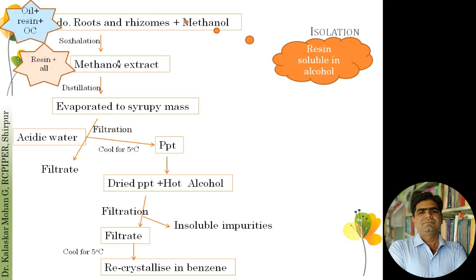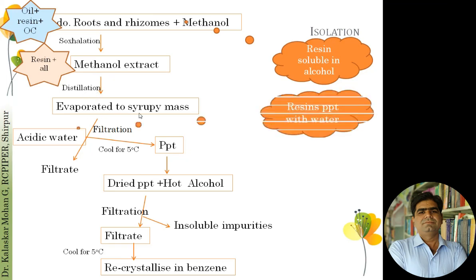The next step is to separate the resin from the other constituents. We know that when resin is added to water, it precipitates out. So the extract is concentrated by distillation to get a syrupy mass, and this syrupy mass is mixed with acidified water. As soon as acidified water is added, the oleoresin, being insoluble in water, precipitates out. This precipitation is carried out at 5°C to maximize precipitation.